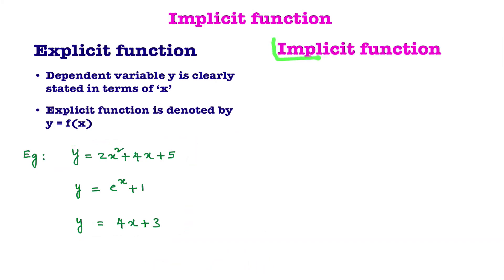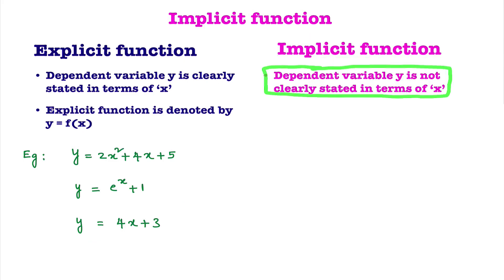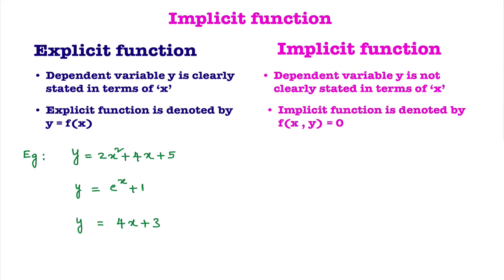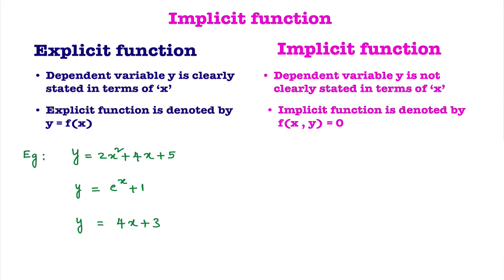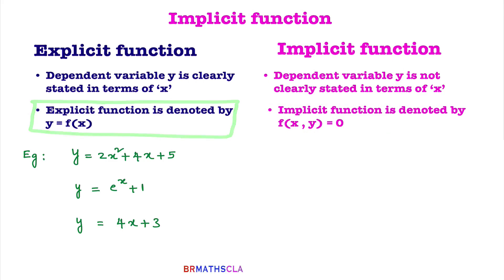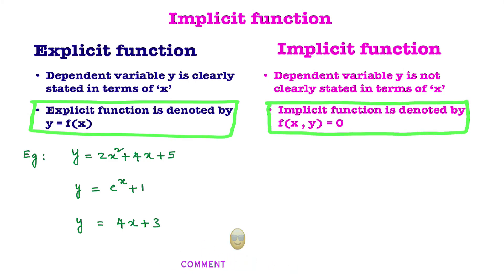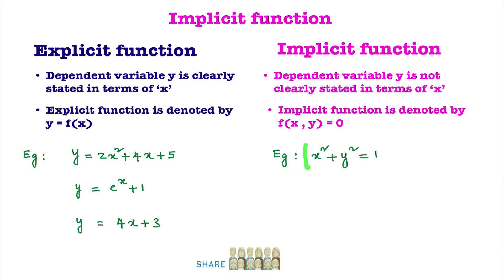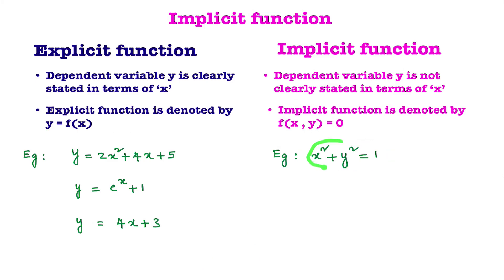Now we will see what is the definition of implicit function. In an implicit function, dependent variable y is not clearly stated in terms of x. Implicit function is denoted by f(x, y) = 0, as opposed to explicit function denoted by y = f(x). For example, x² + y² = 1. By seeing this equation, is y clearly stated in terms of x? No. So this is an example for implicit function. However, this implicit function can be converted into an explicit function.